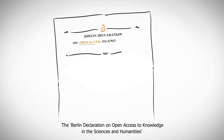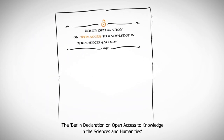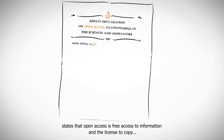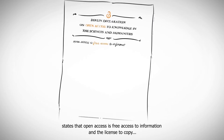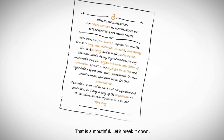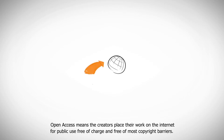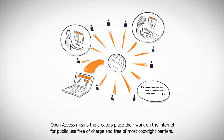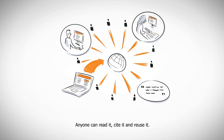So what is open access? The Berlin Declaration on open access to knowledge in the sciences and humanities states that open access is free access to information and the license to copy. That is a mouthful — let's break it down. Open access means the creators place their work on the internet for public use, free of charge and free of most copyright barriers.